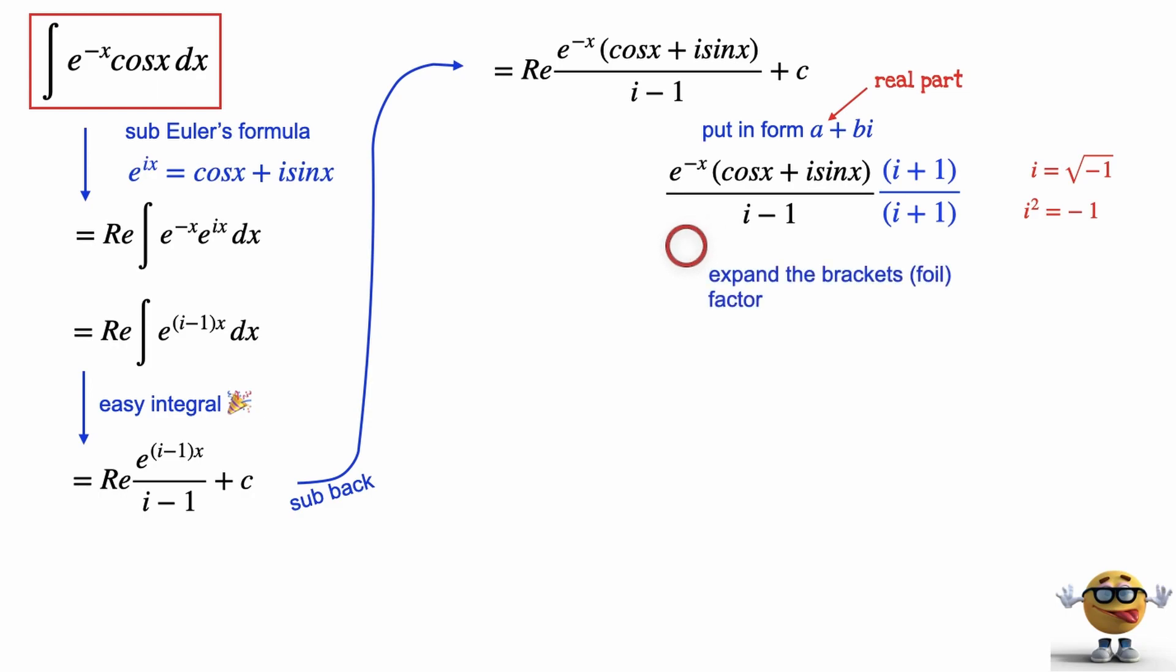foil this out and simplify, we get e to the negative x divided by negative 2 times (cos x minus sine x), which is our real part, plus the imaginary part (cos x i plus sine x i). This is the part we want right here, this is the real part, and literally this